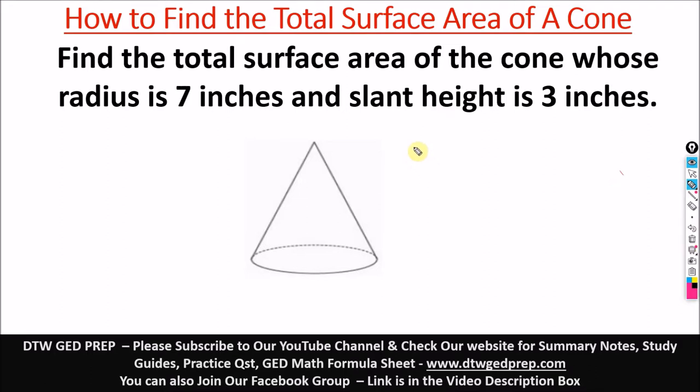So in today's video, we're going to be looking at how to find the total surface area of a cone. So here we have a question. It says, find the total surface area of a cone whose radius is 7 inches and slant height 3 inches.